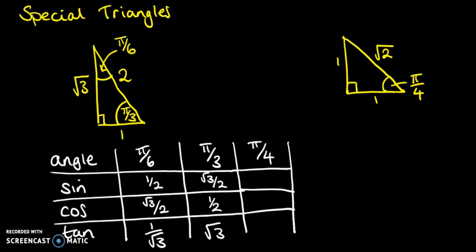So sine is the opposite over the hypotenuse. So that's 1/√2, and carry on with those. And then tan is the opposite over the adjacent, which is 1/1, which just gives us 1.